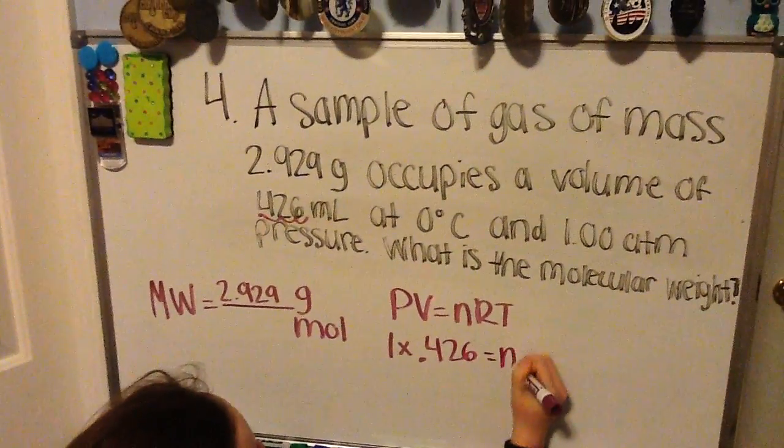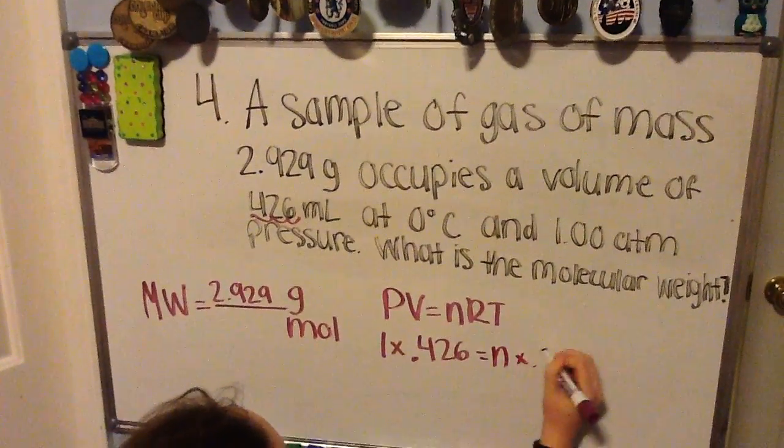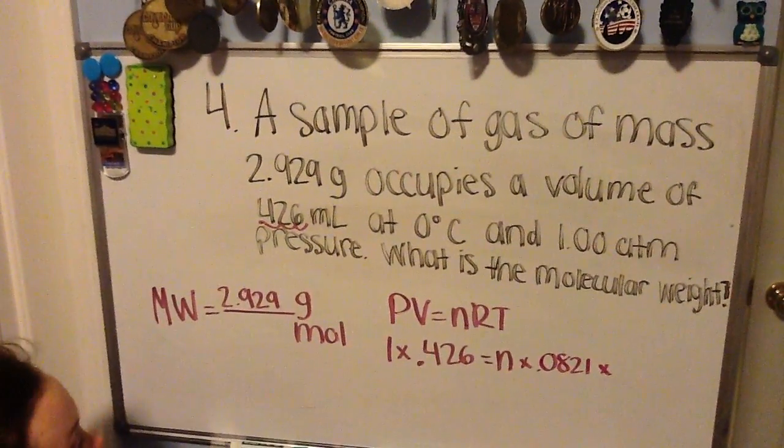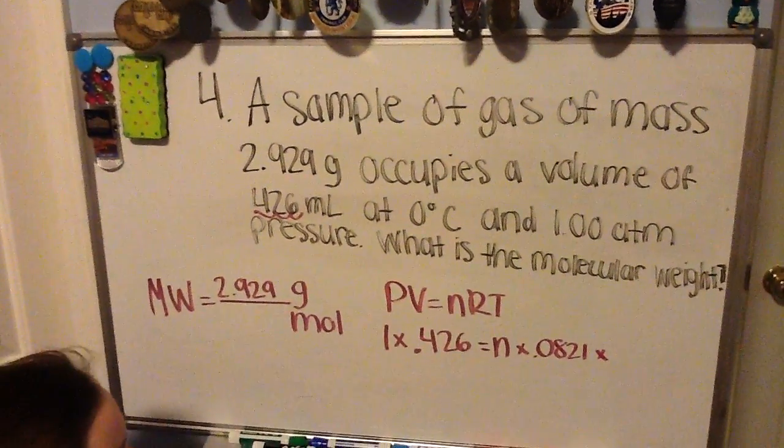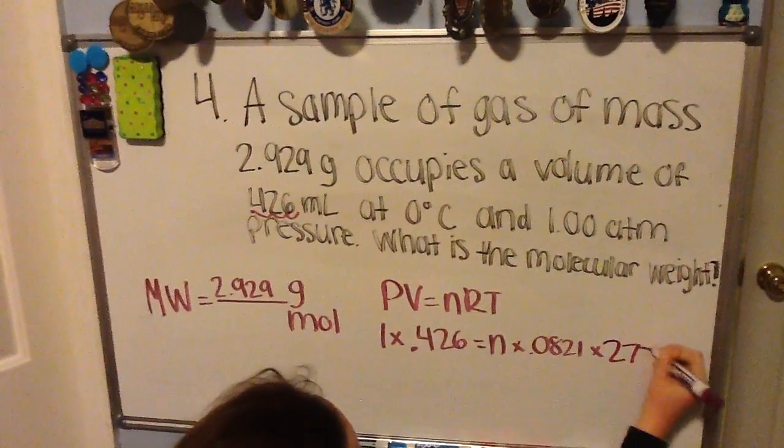That equals n, which is what you're trying to find, your moles. R is a constant, and your temperature is 0 degrees Celsius. So to get it to Kelvin, you just add 273, which equals 273.